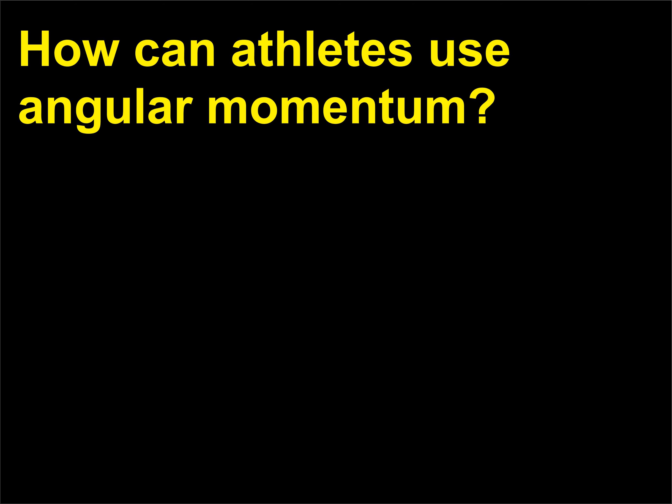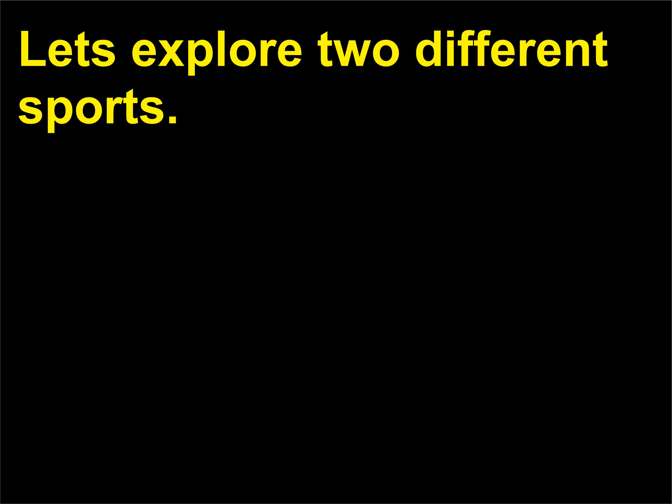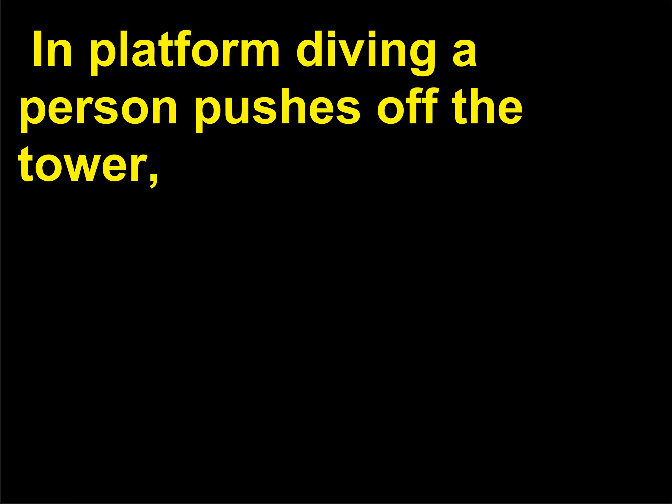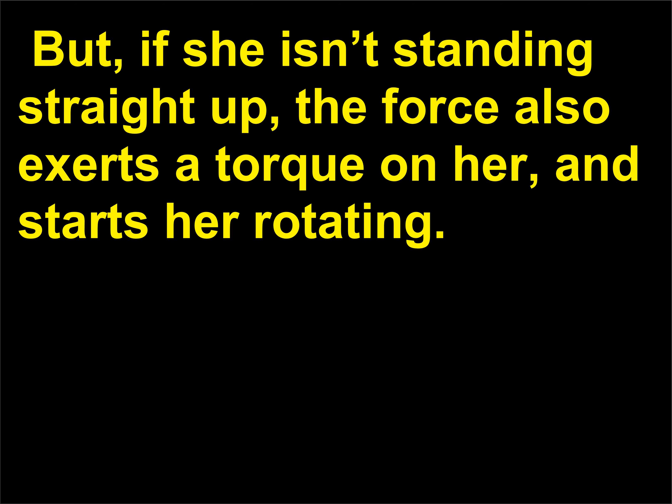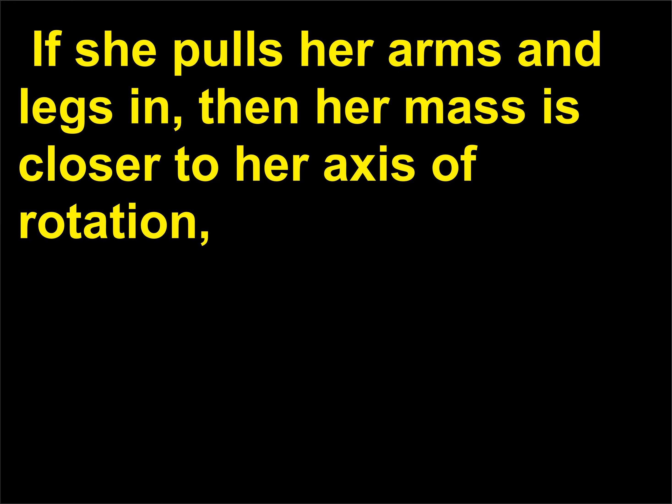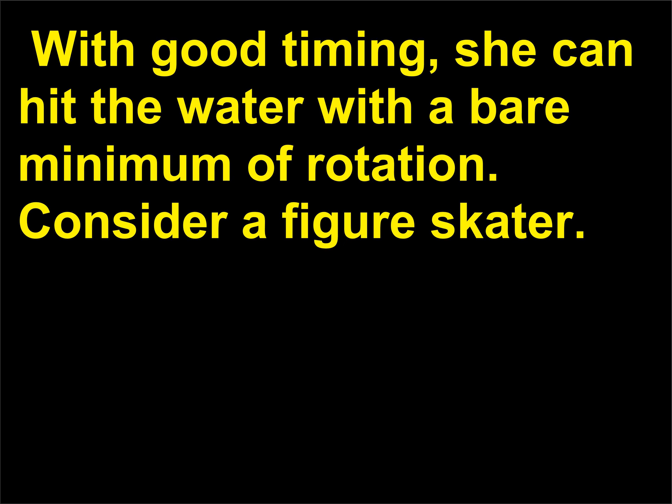How can athletes use angular momentum? In platform diving, a person pushes off the tower, and the platform exerts a force on her — Newton's third law. If she isn't standing straight up, the force also exerts a torque on her and starts her rotating. If she pulls her arms and legs in, her mass is closer to her axis of rotation and her speed of rotation increases. To slow this rotation, she can extend her arms and legs. With good timing, she can hit the water with a bare minimum of rotation.